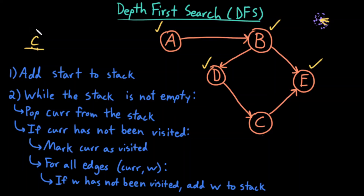While the stack is not empty, pop the next item off — that's C. C is my current element. If the current element has not been visited, mark it as visited. C has one outgoing edge to E. If that neighbor has not been visited — this is false, E has already been visited — so I do nothing. This iteration of the loop is done.